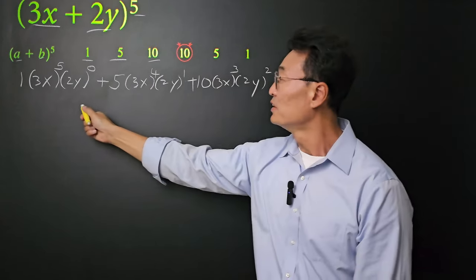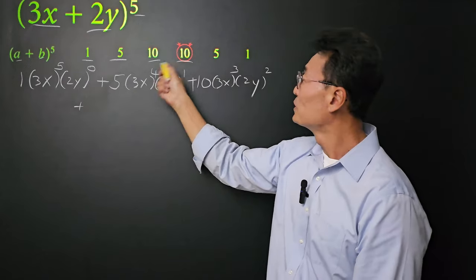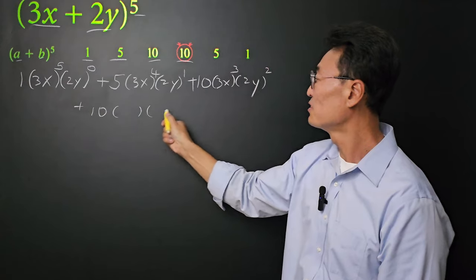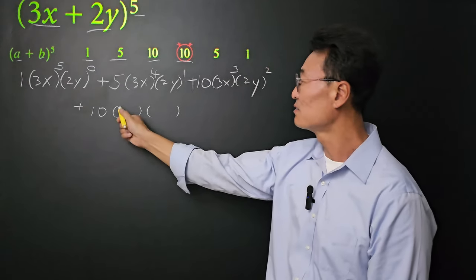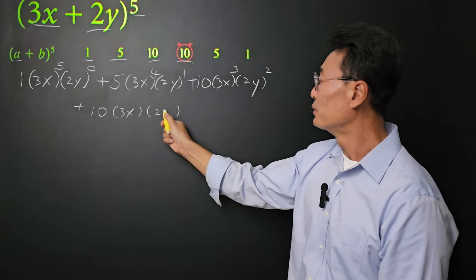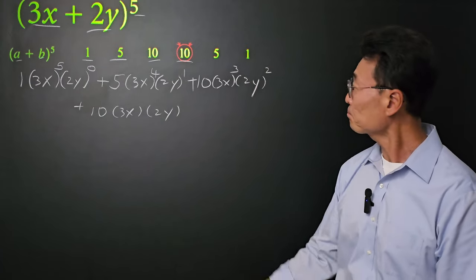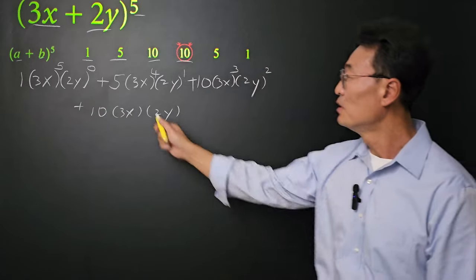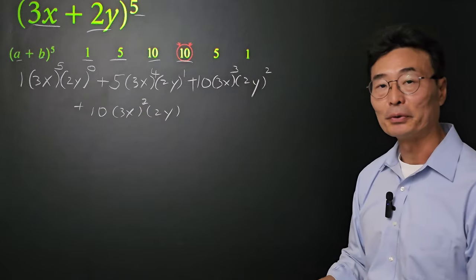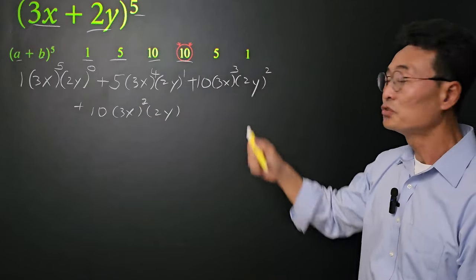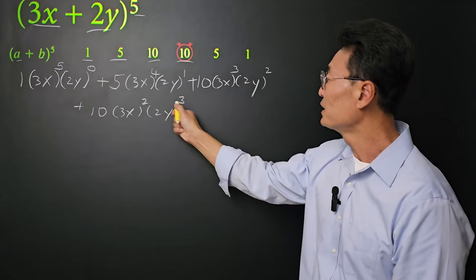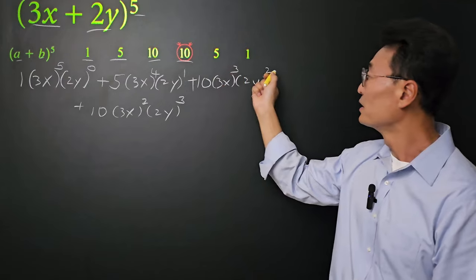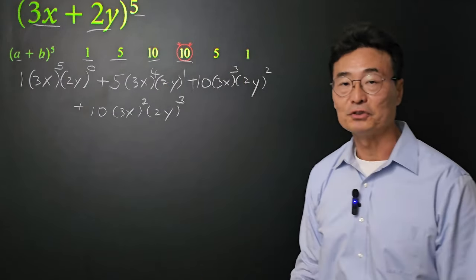Next, underneath, the next coefficient is 10. Notice the two sets of parentheses with 3x and 2y. For 3x, we had a cubed (power of 3), so we now write down 2 — going down by 1. The 2 goes up by 1, becoming a 3. Notice, as always, the exponents — 2 and 3, 3 and 2, 4 and 1 — they all add up to 5.